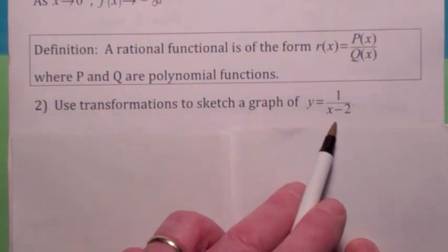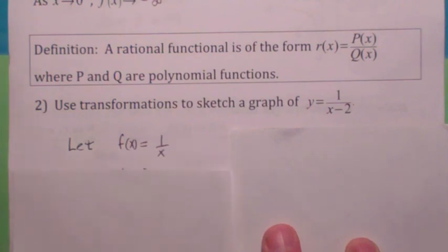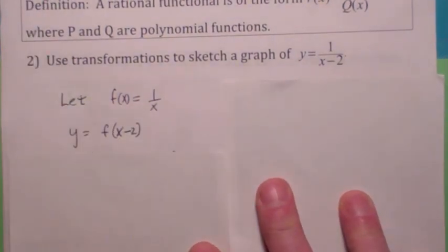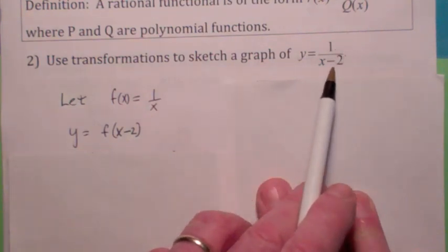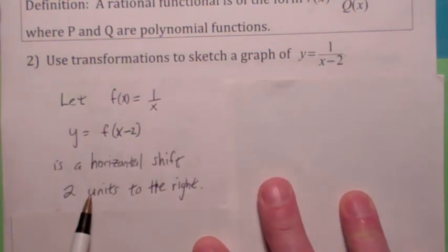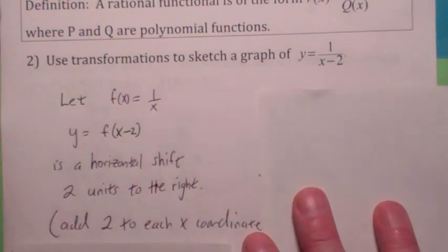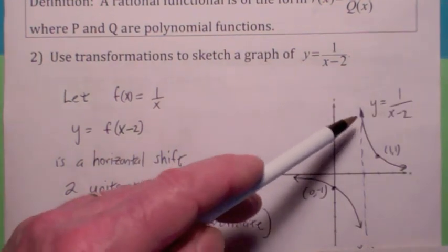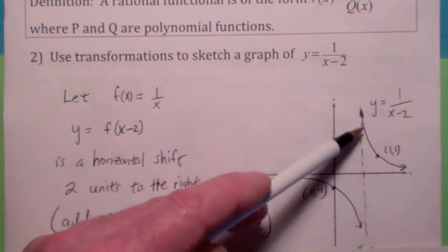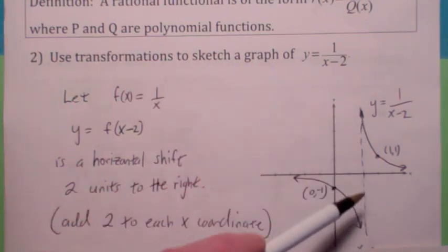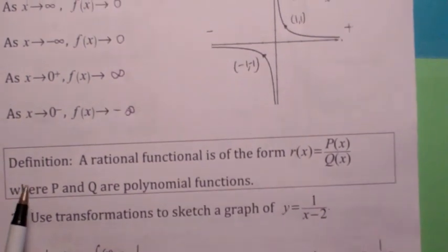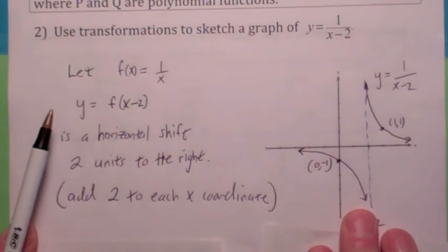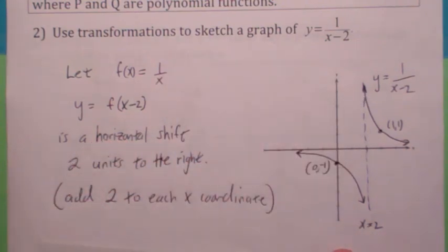For example, if your known function is 1 over x, you can think of 1 over (x minus 2) as f of x minus 2 — just a horizontal shift two units to the right, adding two to each x coordinate. So the graph shifts accordingly. This line is called a vertical asymptote. The original 1 over x had a vertical asymptote at x equals 0, so when you shift the graph two units to the right, this function has a vertical asymptote at x equals 2.